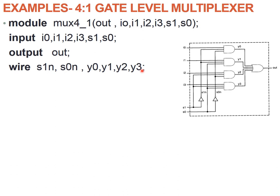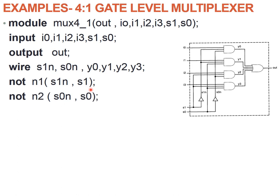Let us instantiate the first NOT gate N1. The output variable is always listed first. The output is S1N and the input is S1: NOT N1 (S1N, S1). The second NOT gate N2 has output S0N and input S0: NOT N2 (S0N, S0). When writing this code, we are doing a straightforward one-to-one translation of the circuit into a description.